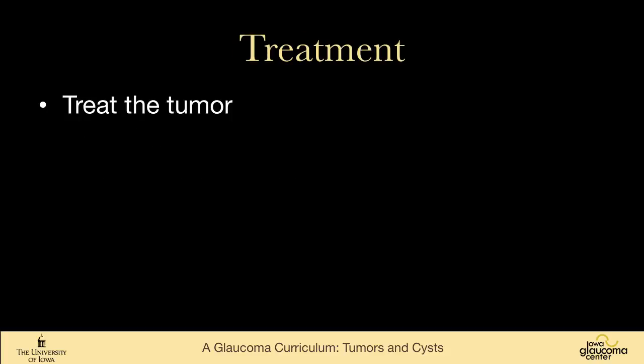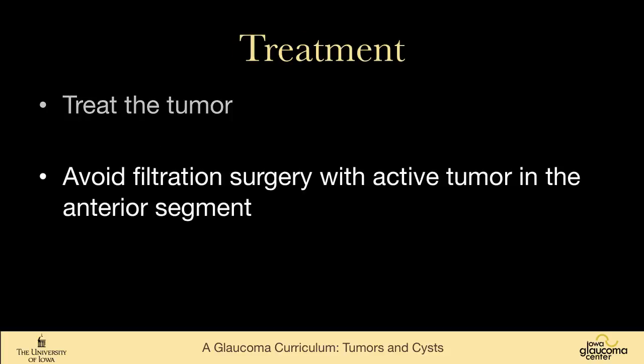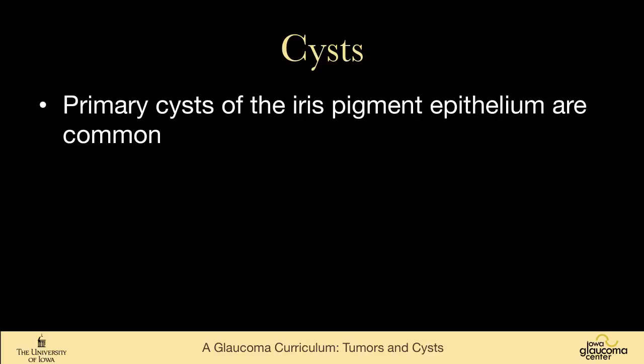We treat tumor-related glaucoma by treating the tumor. One needs to consider avoiding filtration surgery in somebody who has an active tumor in the anterior segment — we don't want to take melanoma and spread it into the orbit.